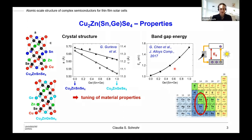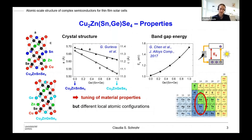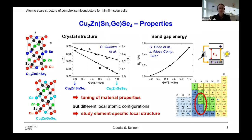As everything in life, this comes with a price. The price is that we have different local atomic configurations, because if we look at one particular group 4 atom, this can only be tin or germanium — there is no such thing as an average group 4 atom. So locally we have different atomic configurations with different structural parameters. That is why we need to study the element-specific structure of these semiconductor alloys.